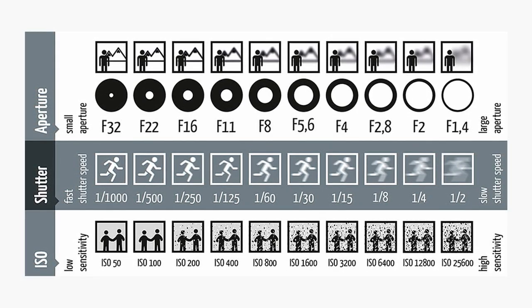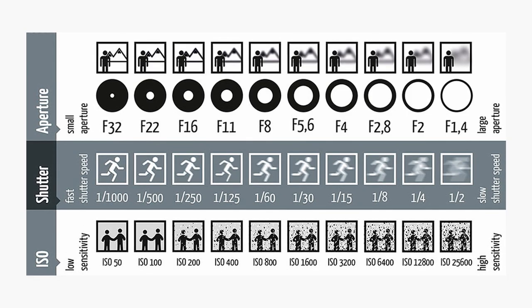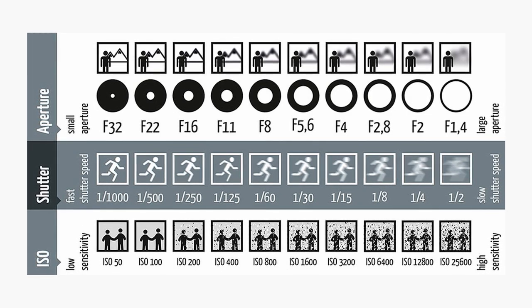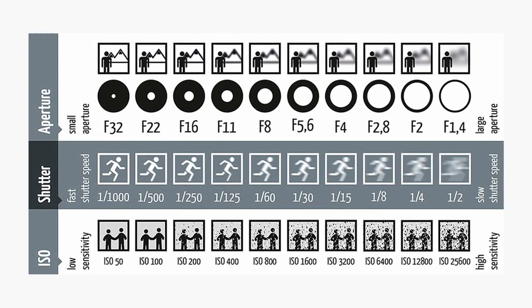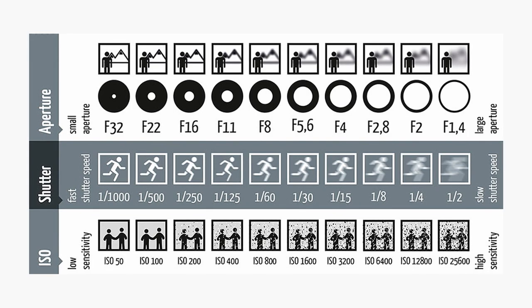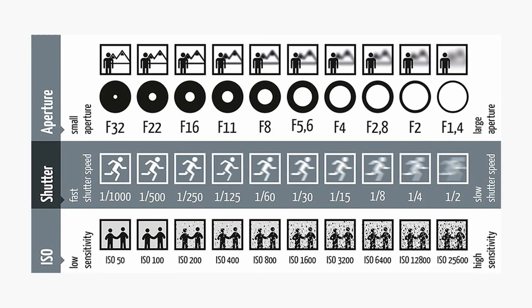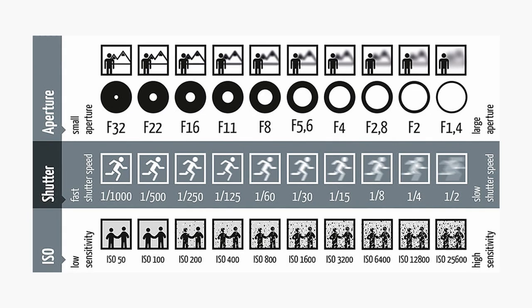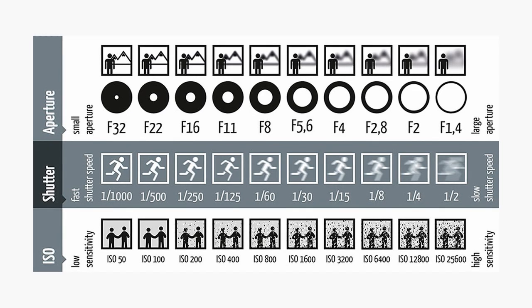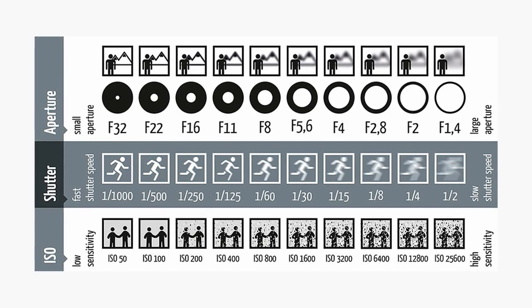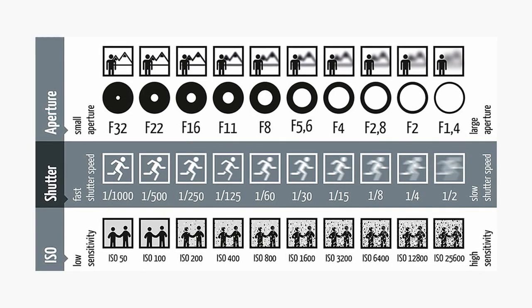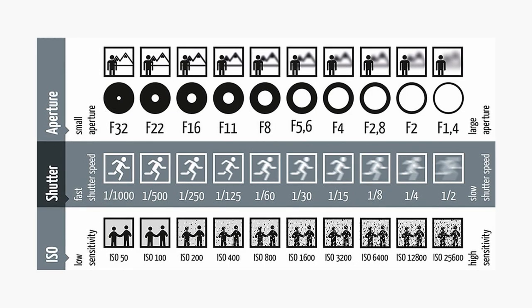Let's look at shutter speed. On the left, a fast shutter speed — 1/1000 — means you'll capture all the action and you won't get any motion blur. If we go to the far right where we've got a slow shutter speed, 1/2, you'll see lots of motion blur. That's a really nice effect if you're filming sport or anything with a lot of action and you want to capture some cinematic motion blur.